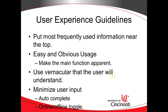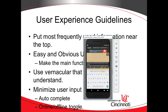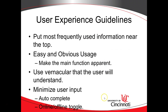Easy and obvious usage — make the main function apparent. With my own app, I initially opened it to a main menu. That was a mistake. Don't make your first screen a splash screen, logon screen, or main menu. The problem with a main menu is it shows everything at the same priority and complicates the user's task. I figured most users would use the search by color functionality, so I went back and changed it to open automatically to the search by color screen.